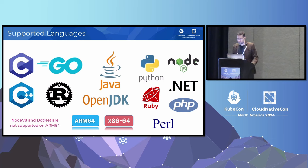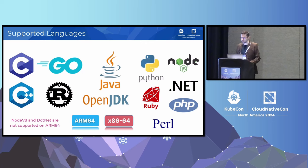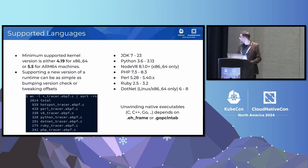These are all the languages we currently support. We support every language that produces native executables with a functional EH_frame section. Regarding missing ARM64 support for .NET and Node.js, there's no technical limitation — we just haven't gotten around to it yet, but contributions are very welcome. These are the minimum kernel versions we support. Generally we try to support the oldest kernel we can reasonably get away with without compromising too much on performance, which for us means LTS kernels.